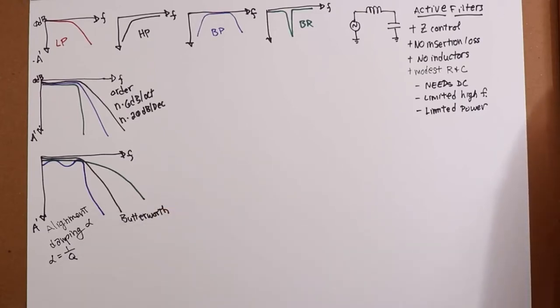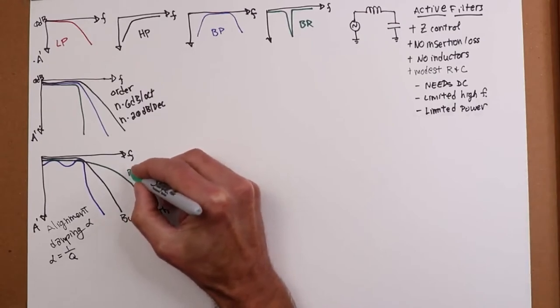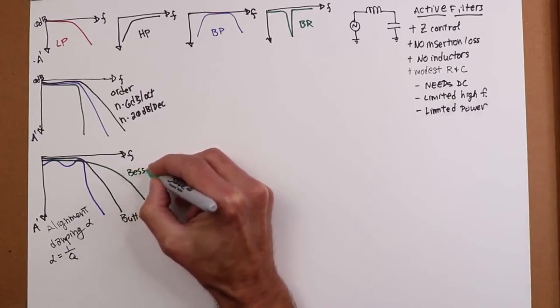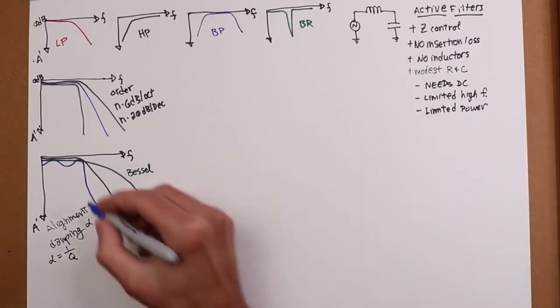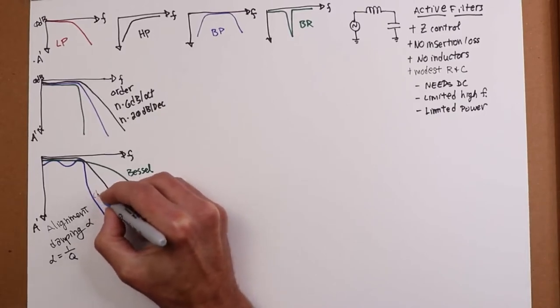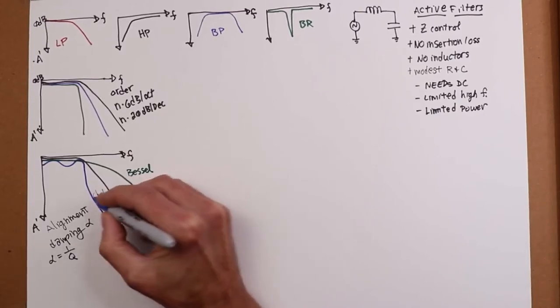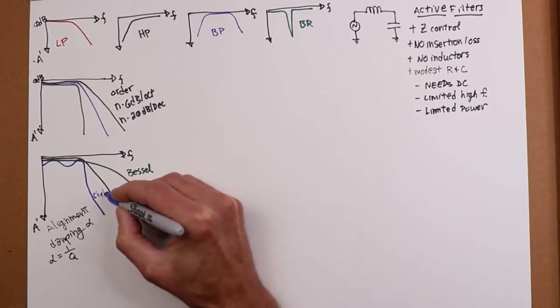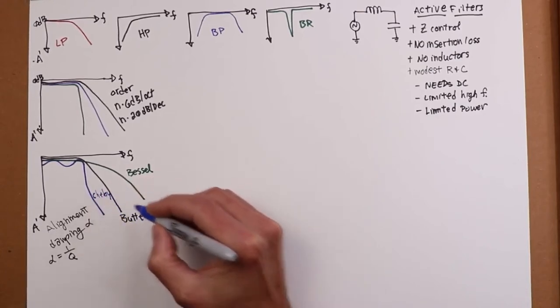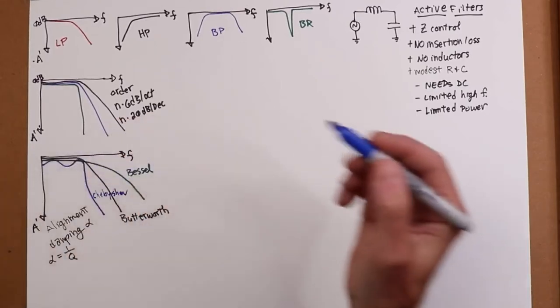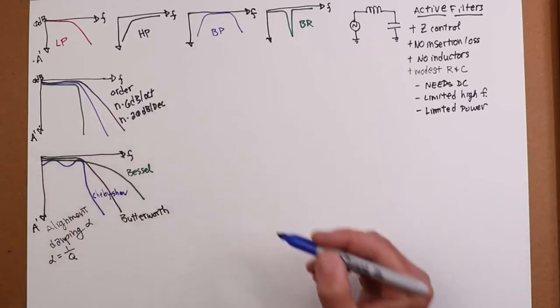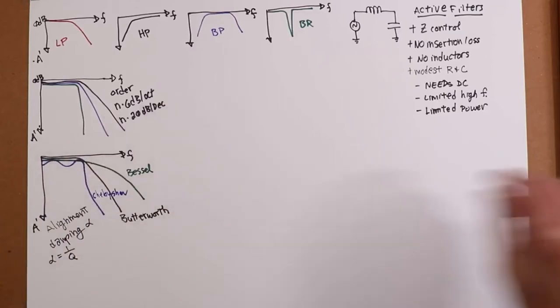The other two that we have, the green, this might be a Bessel alignment. This is a linear phase, so it's really nice for pulses. And the blue here could be a Chebyshev. There's actually a series of different Chebyshevs that you might use. 1 dB ripple, 2 dB ripple, 3 dB ripple, half dB ripple. And they'll all change here a little bit on the steepness end of this.